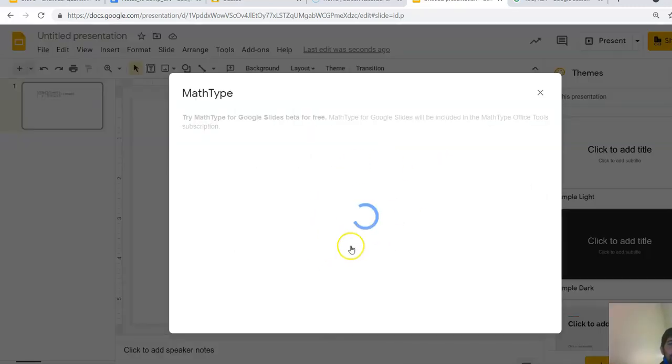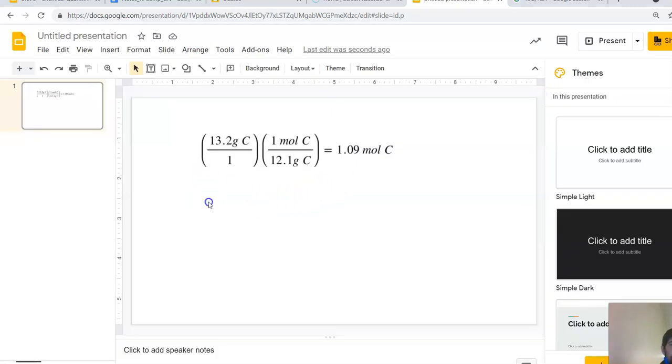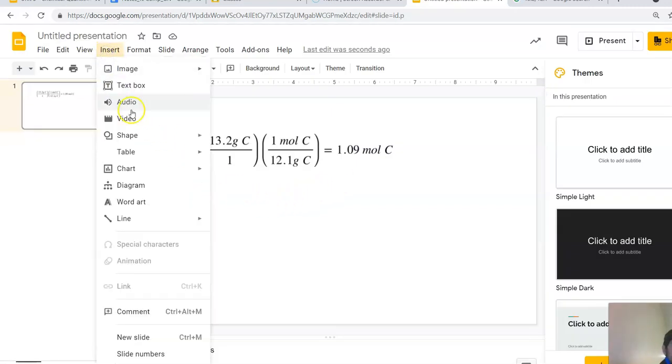You can try doing it in there and that would work. Or if you don't have that MathType add-on or it's not enabled, you can also just insert a table. In this case, I'm going to make it two by two.